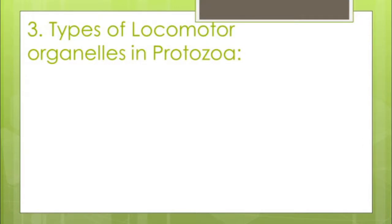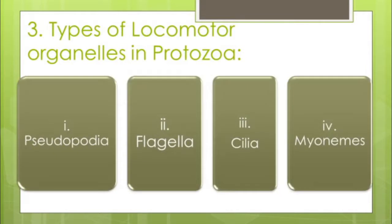Let me explain the types of locomotory organelles in Protozoa. As I said earlier, there are four different types: pseudopodia, flagella, cilia, and myonemes.